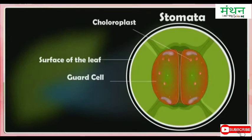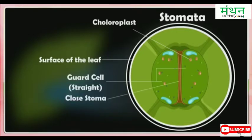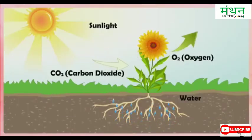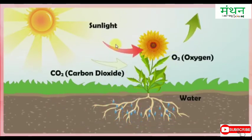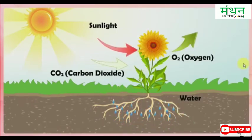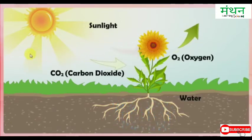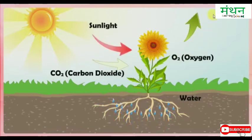Each stomatal pore is surrounded by a pair of guard cells. The opening and closing of stomatal pores is controlled by the guard cells. Carbon dioxide from the air enters the leaves through these stomatal pores. Plants also take water needed for photosynthesis from the soil — water in the soil is absorbed by the roots and then transported to the leaves through vessels running throughout the roots, stem, branches, and leaves.